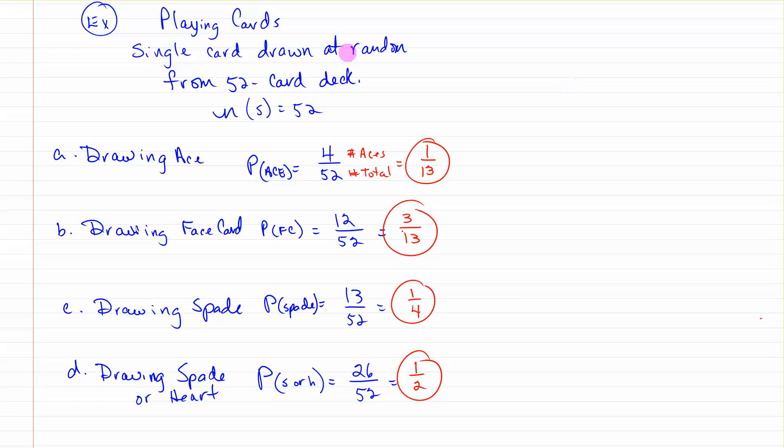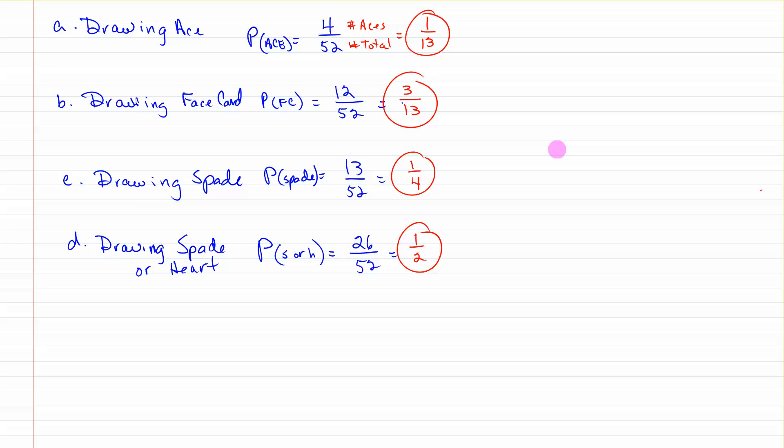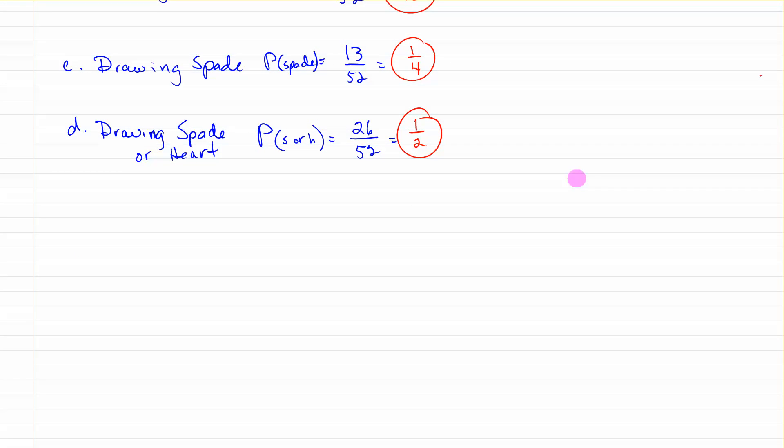Playing cards. A single card drawn at random from a 52-card deck. The number of the sample space is 52. Probability of drawing an ace - there's 4 aces in a deck, so 4 out of 52, you have a 1 in 13 chance. Drawing a face card - there are 12 face cards in the deck, 52 total, so 3 out of 13 chance. Drawing a spade - there are 13 spades in every deck, 52 total, so 1 in 4 chance of drawing a spade. Drawing a spade or a heart - there are 26 total spades and hearts together, out of 52, so 1 in 2 chance.